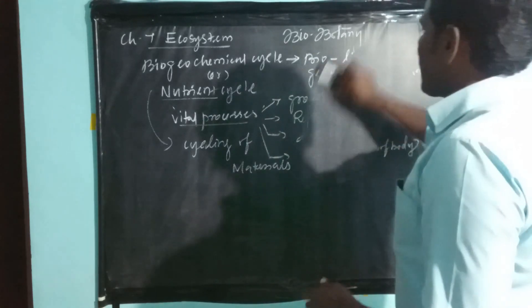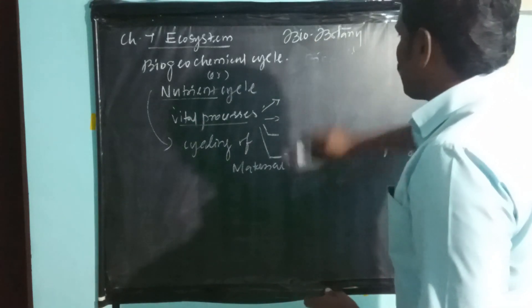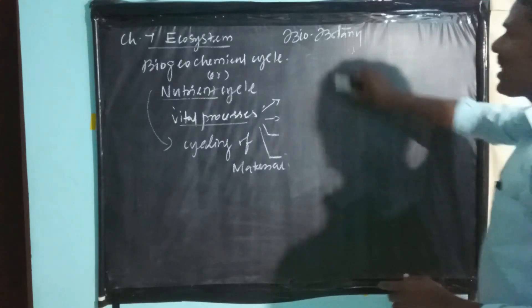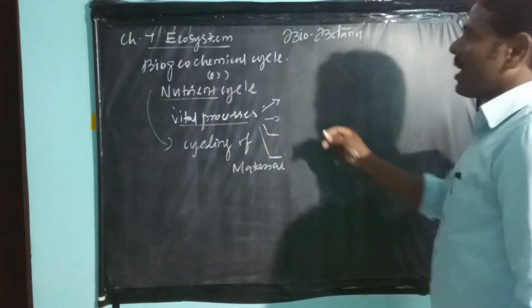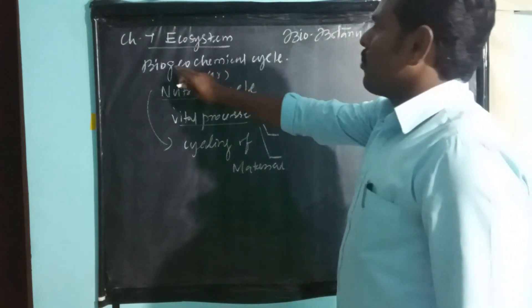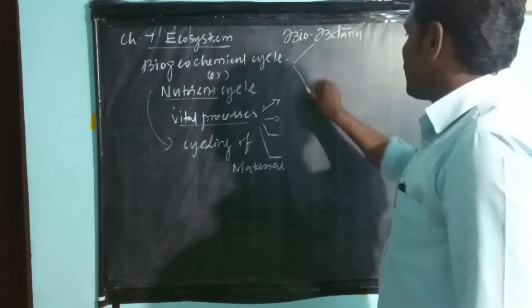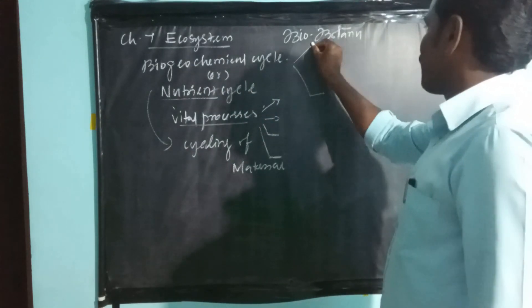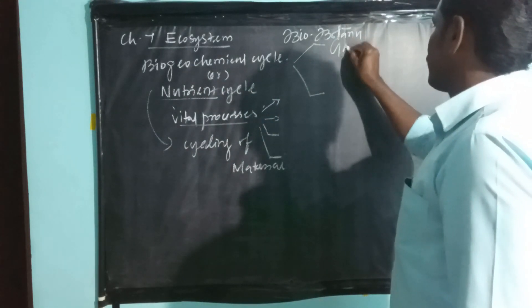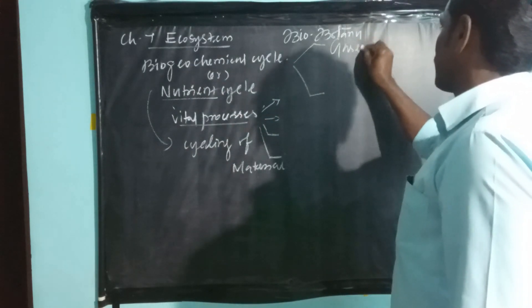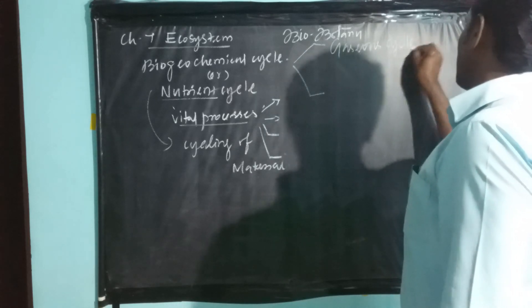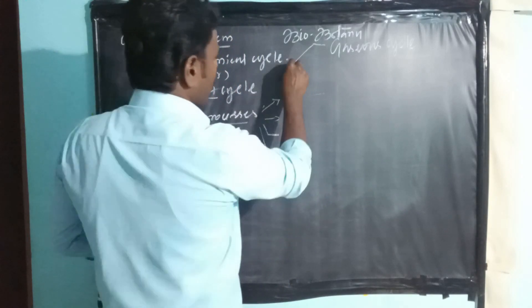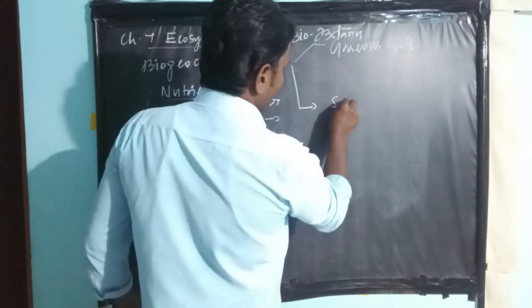There are two basic types of biogeochemical cycles. The first type is the gaseous cycle, and the other one is the sedimentary cycle.